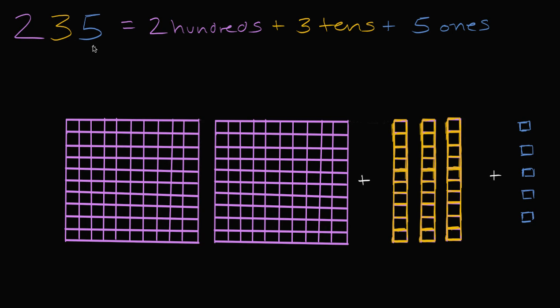So I have the number 235, and we can think of that as two hundreds. We have a two in the hundreds place, so two hundreds. Three tens, we have a three in the tens place, so three tens. And five ones, we have a five in the ones place. And over here, I've actually drawn it out with that many boxes. This is 235 boxes.